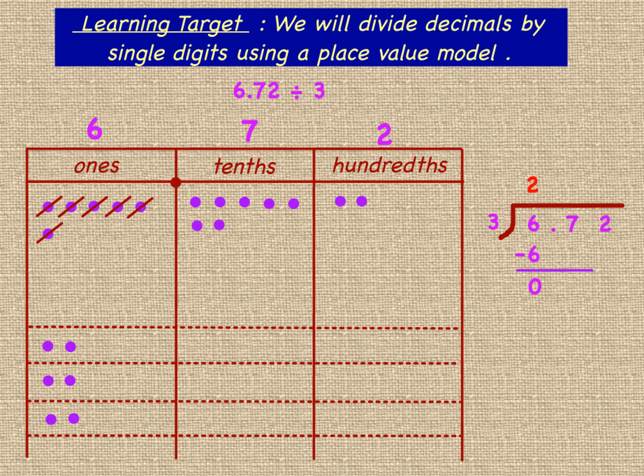We'll do the exact same thing in the tenths column. We'll distribute each of these place value disks into the group. In our algorithm we have 7 tenths to distribute. Once we distribute them, we have 2 disks in each of our groups, which we represent with a 2 in the tenths column. We were able to distribute 6 of them. When we subtract those 6 from our original 7 tenths, we are left with 1 tenth left.